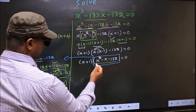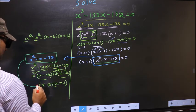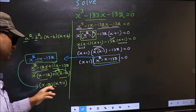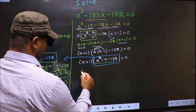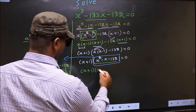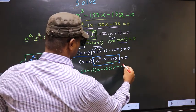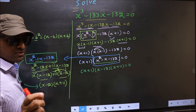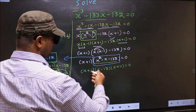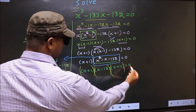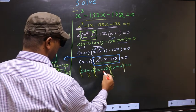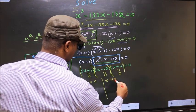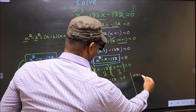In place of the quadratic we now write x minus 12 times x plus 11. So the full equation becomes x plus 1, times x minus 12, times x plus 11, equal to 0. Since we have a product of brackets equal to zero, we equate each bracket to zero: x plus 1 equal to 0, x minus 12 equal to 0, x plus 11 equal to 0.